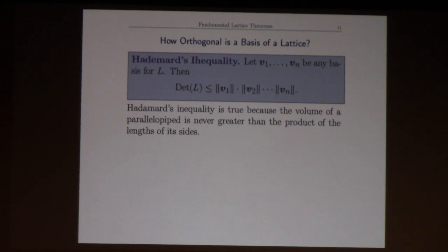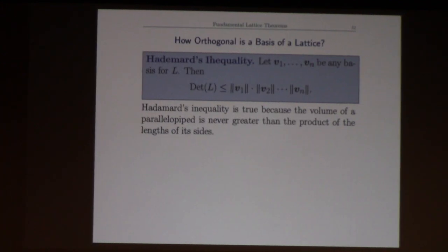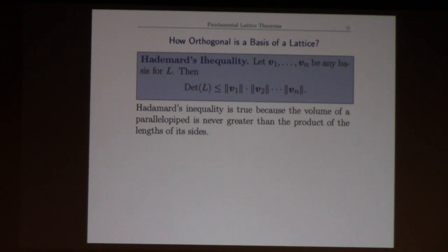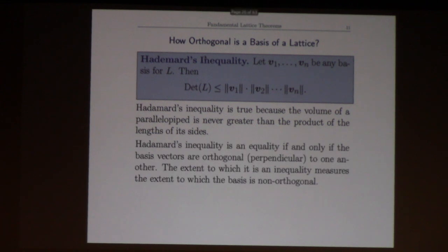You get equality if and only if all of the vectors are perpendicular to one another, so you're getting a rectangular shaped box. It's true because a parallelepiped never has volume greater than the product of its sides. In these lectures the notes contain a lot more detail, so if there's something I've done that's a little quick you can go look in the notes.